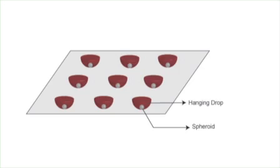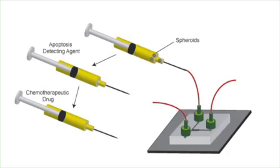Next, uniform multicellular tumor spheroids are generated for use in the device using the hanging drop method. The spheroids are then introduced into the device, followed by apoptosis detecting agents and chemotherapeutic drugs.